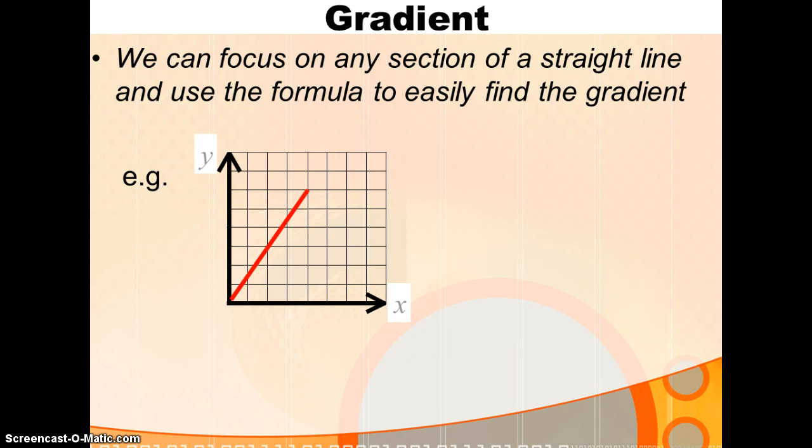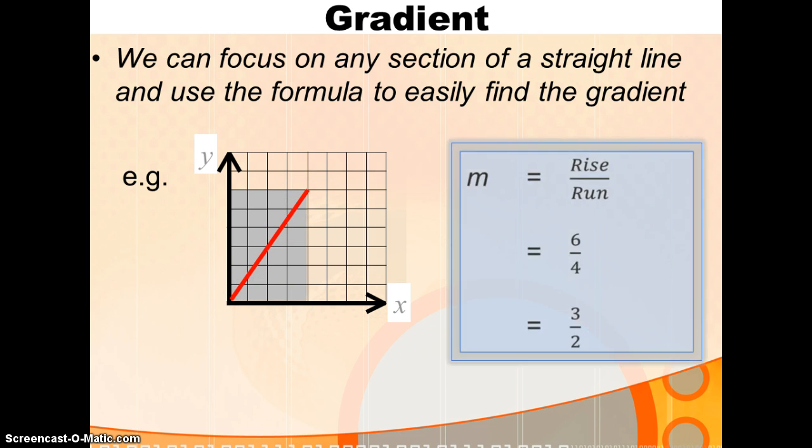Looking at this line, consider the rise over the run. You've climbed up 1, 2, 3, 4, 5, 6 units. You've come across 4 units. So, your rise is 6, your run is 4, and you can simplify that gradient to 3 over 2, which is the same as 1.5.